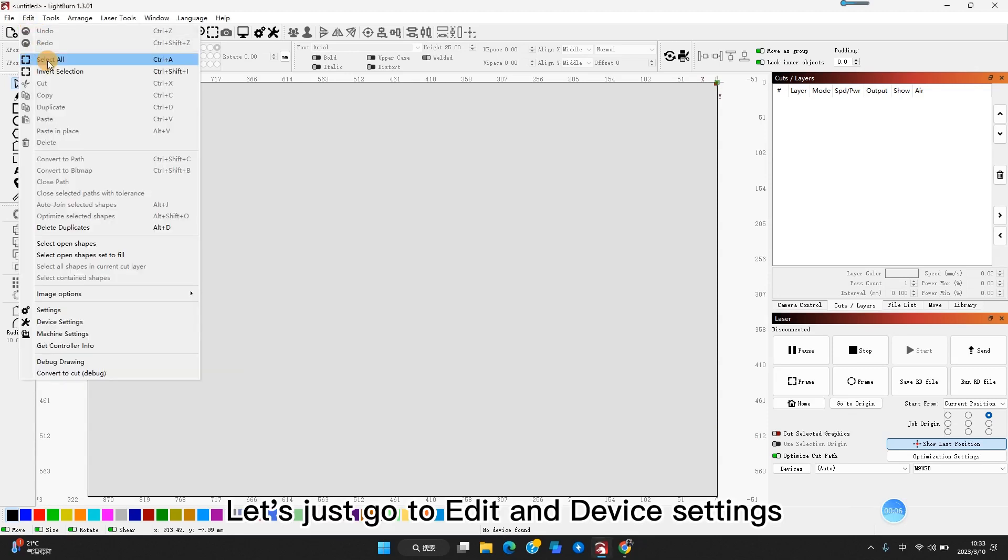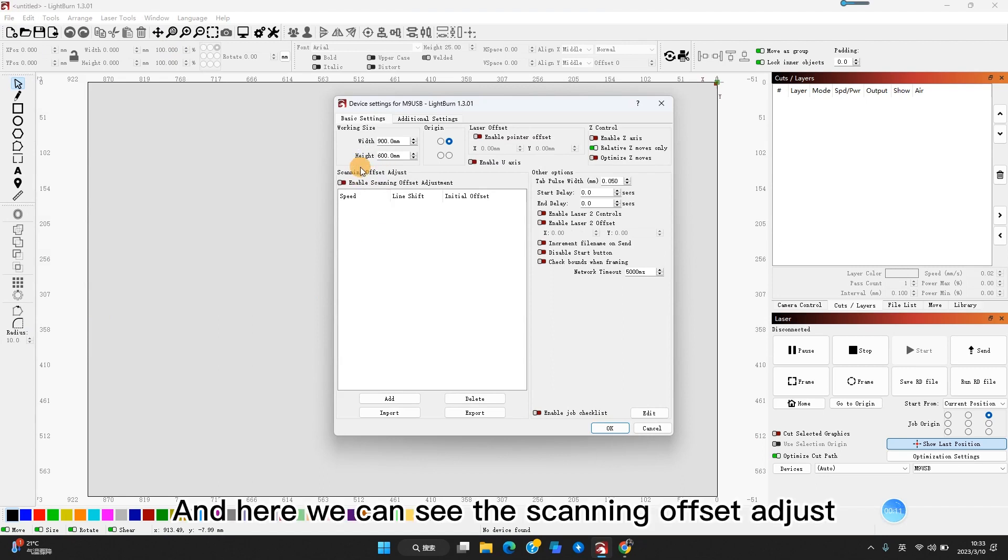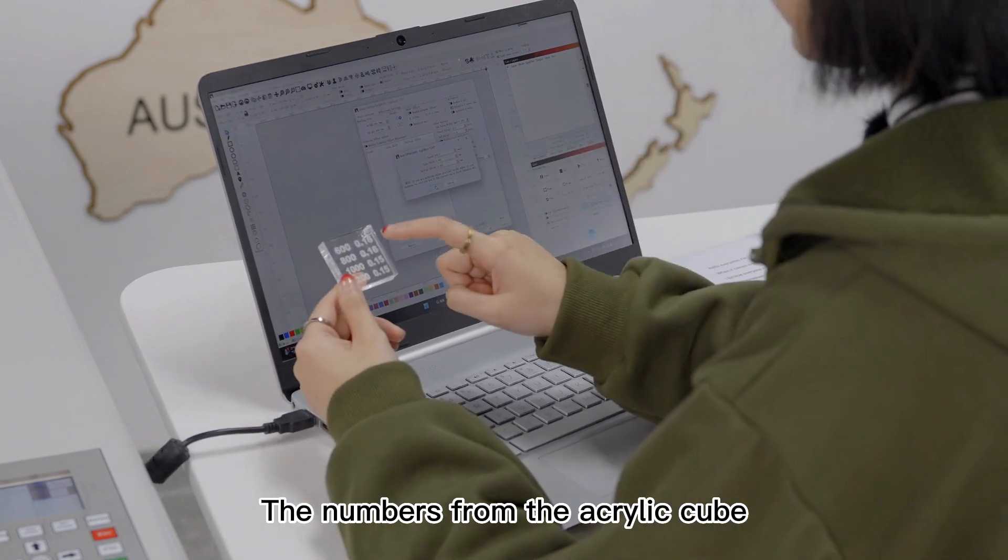Let's go to Edit and Device Settings. Here we can see the scanning offset adjust. Let's simply add the numbers from this acrylic cube.